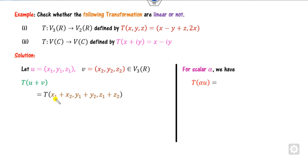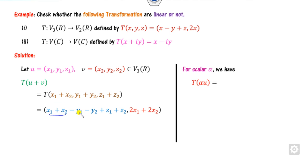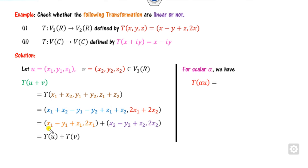Starting the substitution: this is x, this is y, this is z. Substituting gives x minus y plus z and 2x. Combining them for the first pair and the second pair, this is nothing but T of U. So the first property is satisfied.